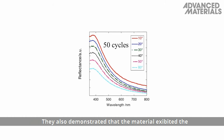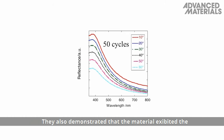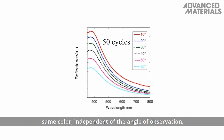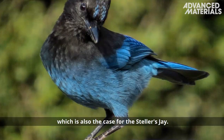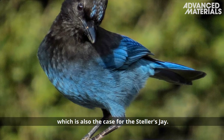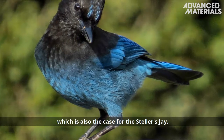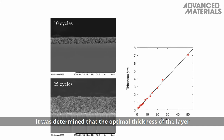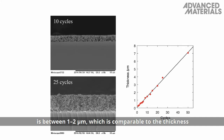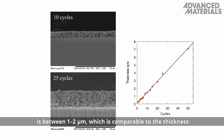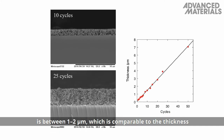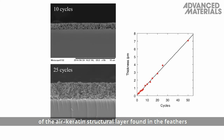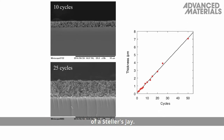They also demonstrated that the material exhibited the same color independent of the angle of observation, which is also the case for Stella's jay. It was determined that the optimal thickness of the layer is between 1 and 2 micrometers, which is comparable to the thickness of the air-keratin structural layer found in the feathers of Stella's jay.